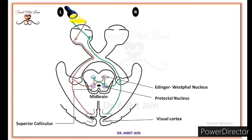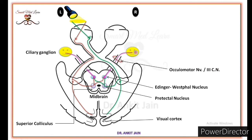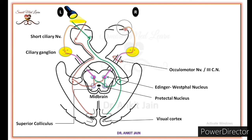Now from the Edinger-Westphal nucleus, pre-ganglionic parasympathetic fibers arise, which travel through the corresponding oculomotor nerve and terminate in the ciliary ganglion. From the ciliary ganglion, post-ganglionic parasympathetic fibers arise and travel through the short ciliary nerve to supply the constrictor pupillary muscles and ciliary muscles.